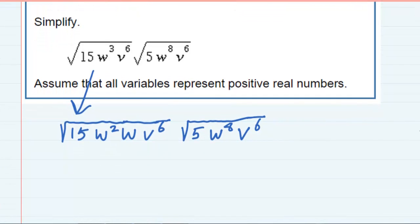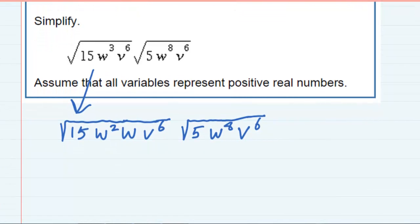So now, I can bring out the w squared as just a w, I can bring out the v to the sixth as a v cubed, and the rule is that we have to divide the power by 2, and that leaves me with a 15 and a w underneath the radical.